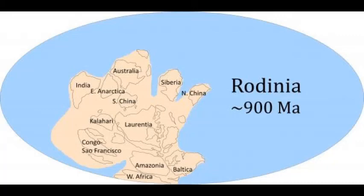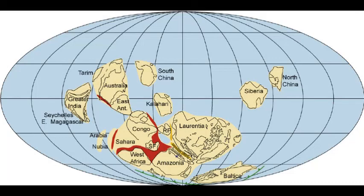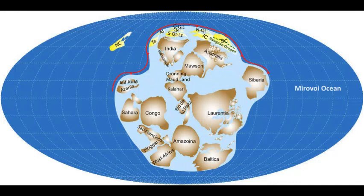The great continental construction project that built North America began with the supercontinent Rodinia, which formed 1.2 billion years in the past by a coalescence of fragments produced by the breakup of an older supercontinent. The word Rodinia originates from the Russian and fittingly means to beget, to give birth, as well as motherland and birthplace.